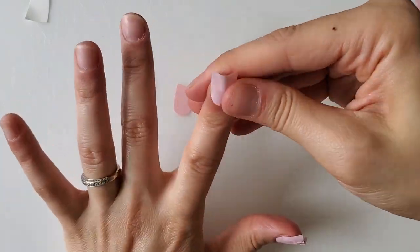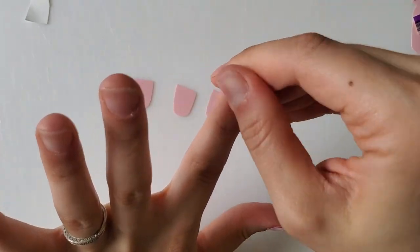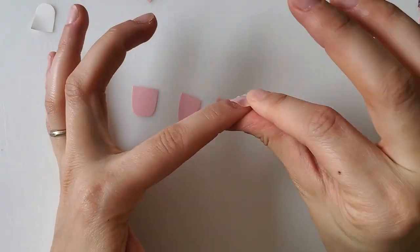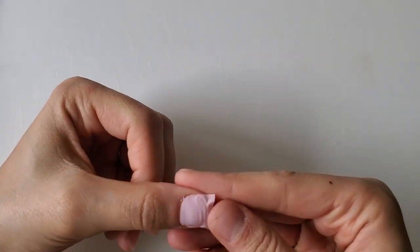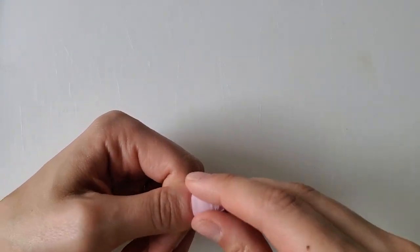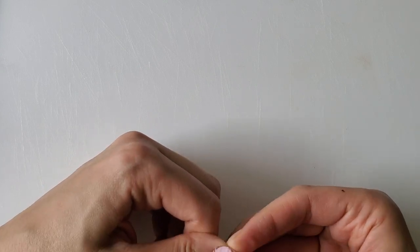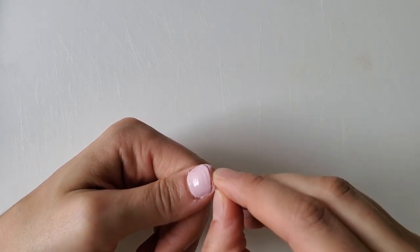I also want to explain to anyone that's wondering, I heard that you're able to cut the strips in half if you have short nails because then you can get twice the application for the next time you want to do your nails.